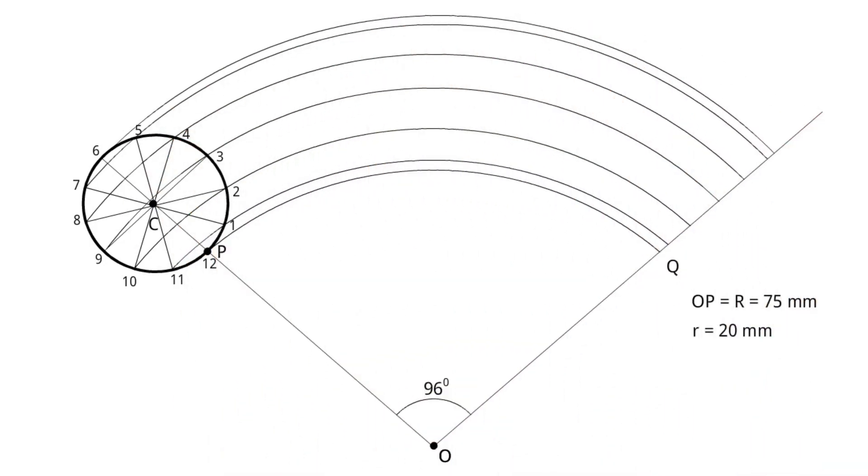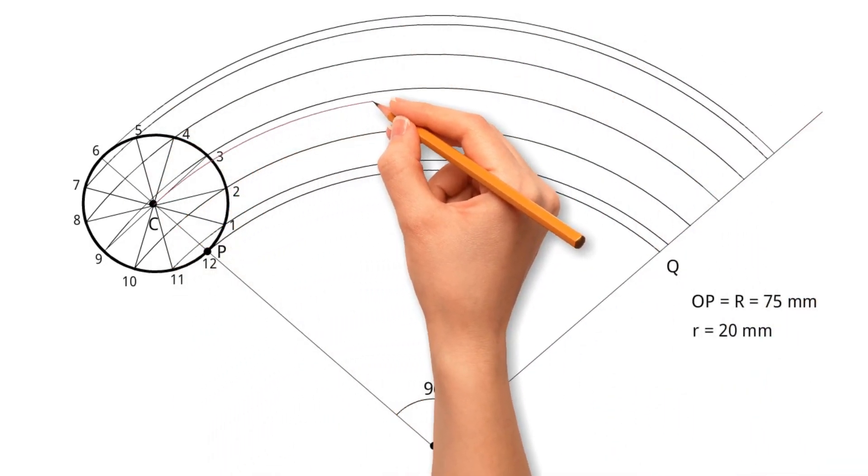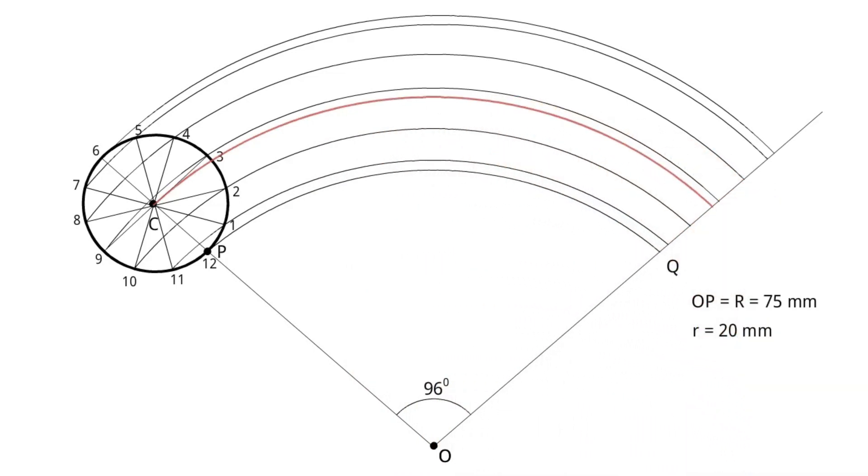Step 7. Draw one arc from center of the smaller circle. This arc is called locus of center.